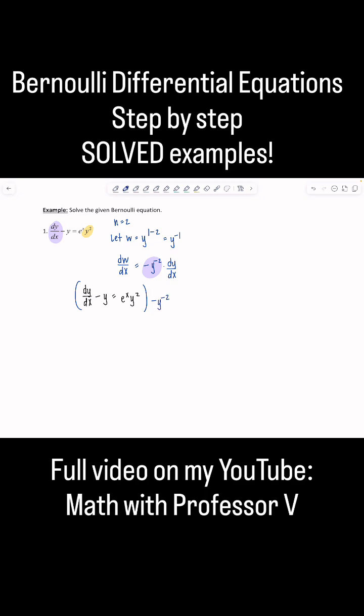Because my goal is to have this first term be dw/dx. So now let's see what we got: negative y to the negative second dy/dx, this will be plus y to the negative first, equals negative e to the x.